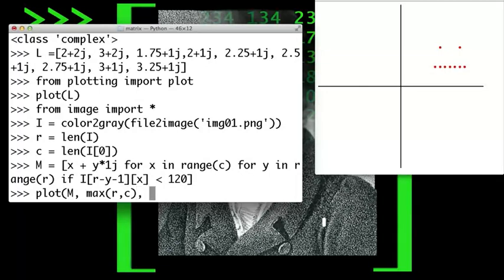The plot function takes an optional second argument giving the scale of the plot, and an optional third argument giving the size in pixels of the points displayed.